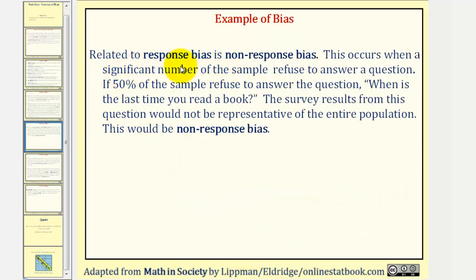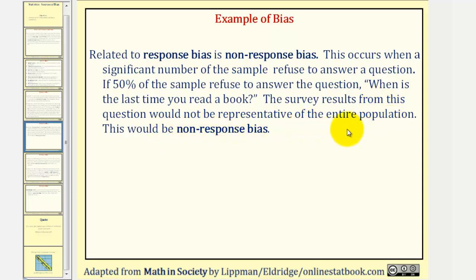Related to response bias is non-response bias. This occurs when a significant number of the sample refuse to answer a question. If 50% of a sample refuses to answer the question, when is the last time you read a book, the survey results would not be representative of the entire population. This is an example of non-response bias.